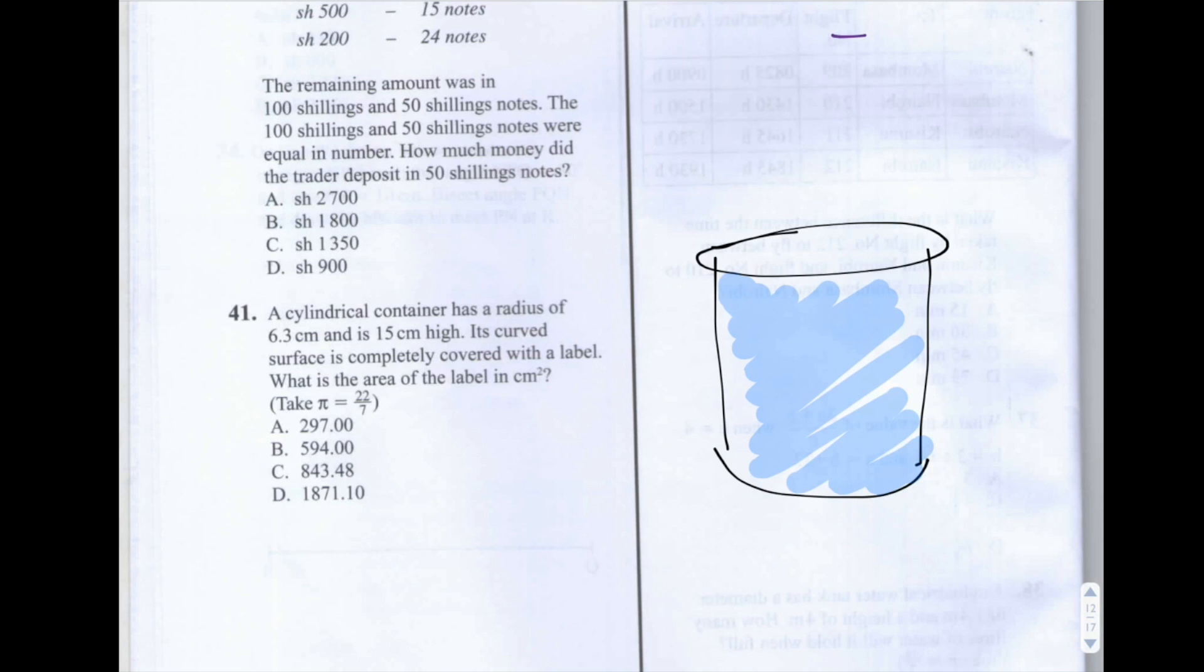What is the area of the label in cm²? So I've drawn out the cylinder here so that you can see it. And I've just highlighted in blue its curved surface which we're told is completely covered with a label.